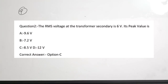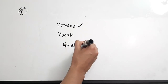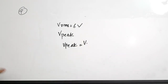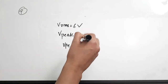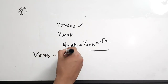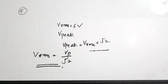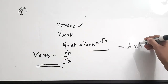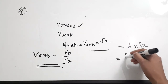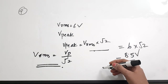Second question: the RMS voltage of a transformer secondary is 6 volts. Its peak value is dash. V_RMS is 6 volts and we need to find V_peak. The relation is V_RMS = V_peak / √2, so V_peak = V_RMS × √2. Here, V_peak = 6 × √2, which gives approximately 8.5 volts. So option C, 8.5 volts, is the correct answer.